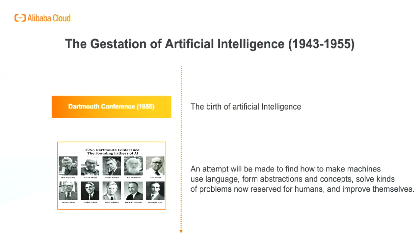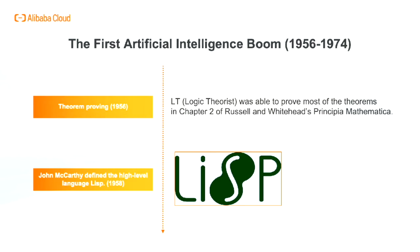The concept of artificial intelligence was born at Dartmouth's conference in 1956, proposing that an attempt will be made to find how to make machines use language, form abstractions and concepts, solve kinds of problems now reserved for humans, and improve themselves. The period 1956 to 1974 was the first upswing of artificial intelligence. Newell and Simon already had a reasoning program, The Logic Theorist, about which Simon claimed they had invented a computer program capable of thinking non-numerically and thereby solved the mind-body problem. The program was soon able to prove most of the theorems in Chapter 2 of Russell and Whitehead's Principia Mathematica. In 1958, McCarthy defined the high-level language Lisp, which was to become the dominant AI programming language for the next 30 years.